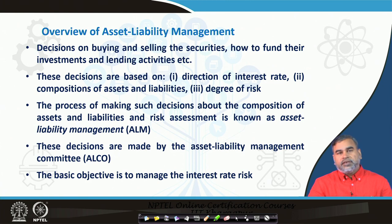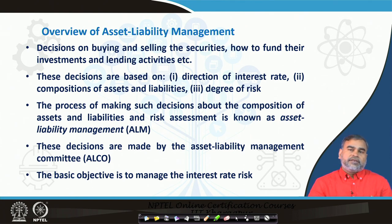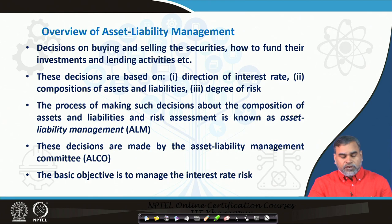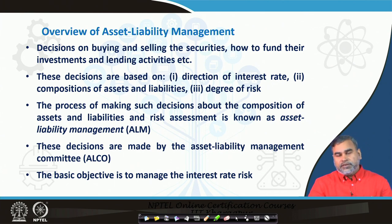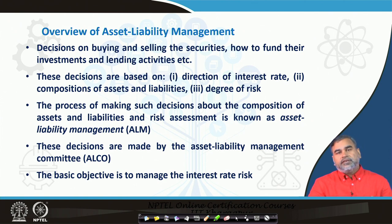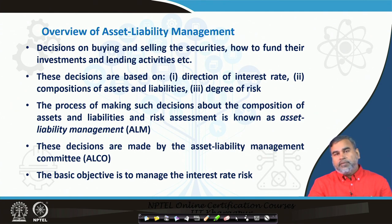Mostly every bank has an asset liability management committee, popularly known as ALCO. This asset liability management committee takes decisions regarding the composition of assets and liabilities that the banks would maintain to minimize interest rate risk or any other risk in the market. Although asset liability management is used for other types of risk as well, mostly it is used to manage interest rate risk. The basic objective of ALM is to manage interest rate risk in the banking sector.